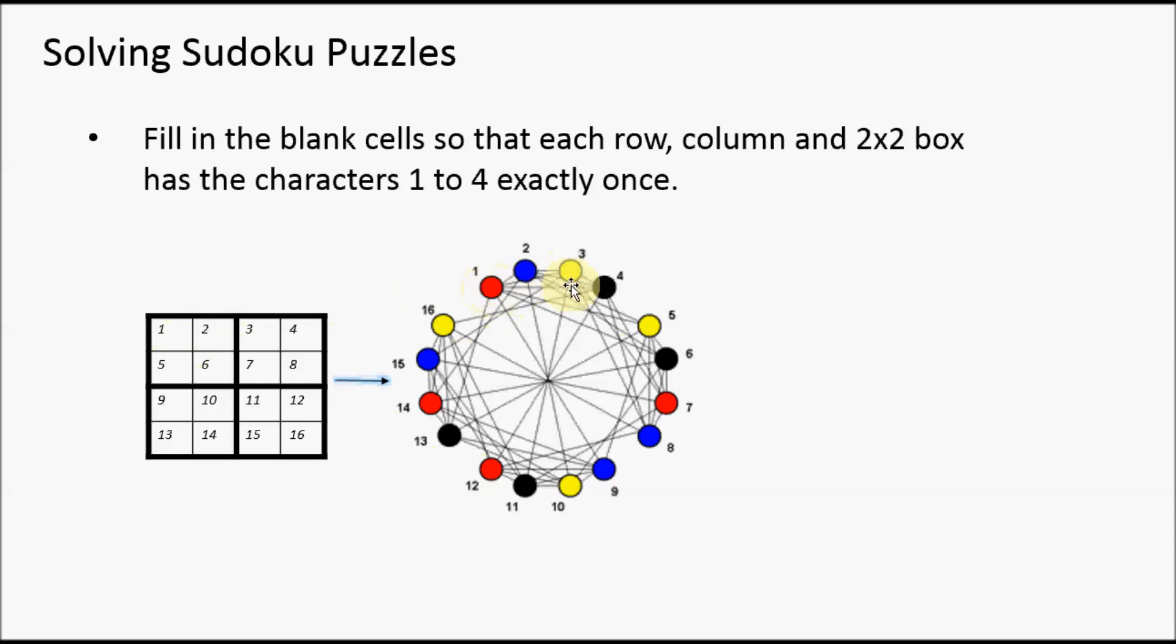It has an edge between 5, 9, and 13 because they're in the same column. It also has an edge between 5 and 6 because they're in the same box. Once we add those edges for all vertices, we can see a coloring for that.